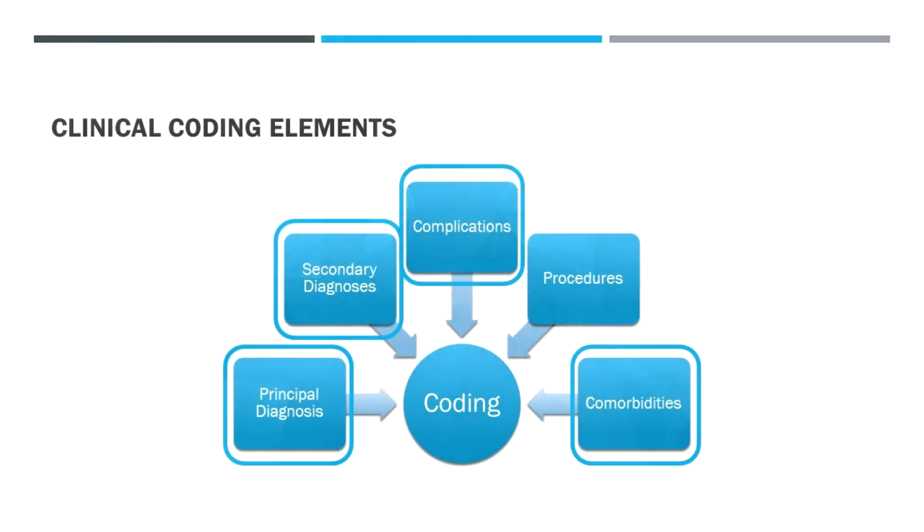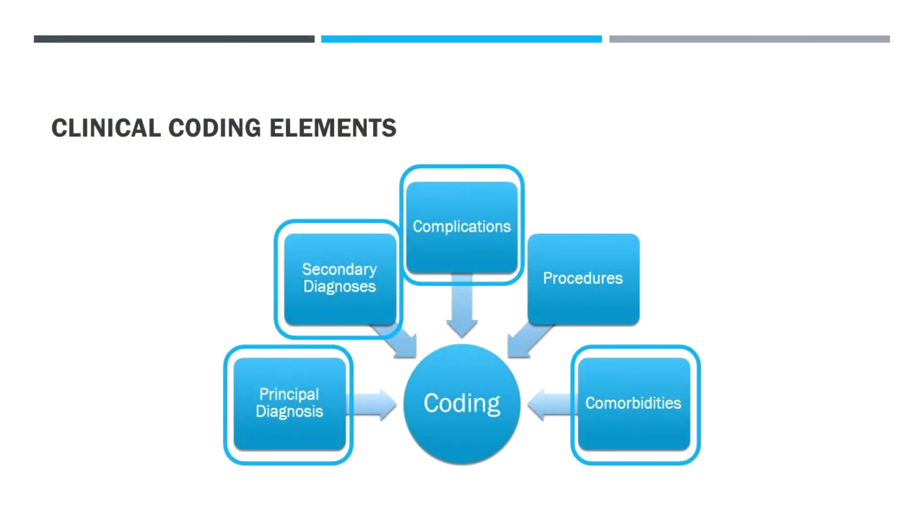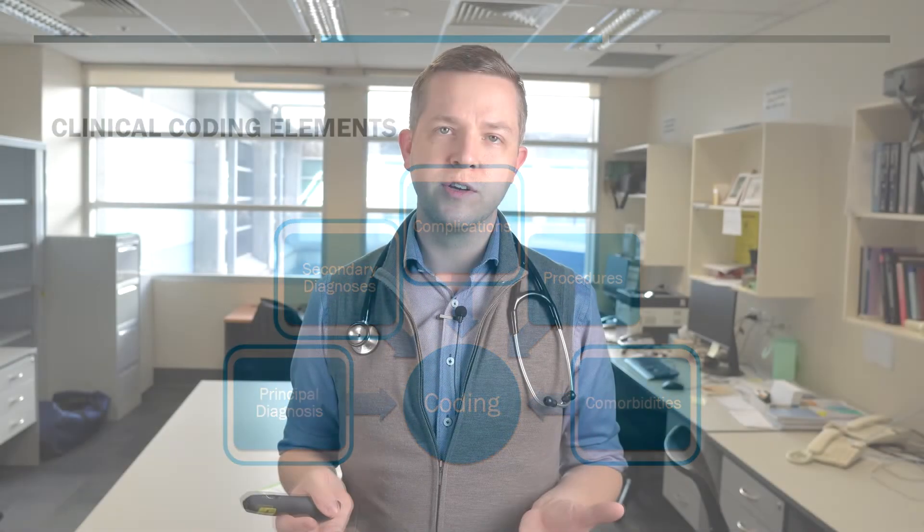If this is your first time joining us with coding matters, just a reminder that the DRG — the admission diagnosis group — is what a patient is admitted under in hospital. It relies on a principal diagnosis that informs the DRG, and then complexity is added according to secondary diagnoses, complications, and comorbidities. That's what we're going to focus on.